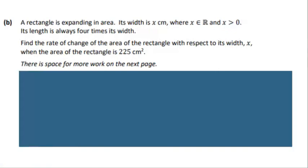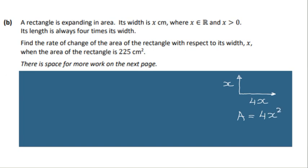Part b is a little bit more challenging because we're not given much information — we have to put it all together. We have a rectangle whose area is changing and we have to find the rate of area with respect to x when the rectangular area is 225 cm². We also have additional information: the width is x and the length is 4x, as it's changing 4 times as fast. So if we have width x and length 4x, our area formula can be summed up as 4x², length times width.